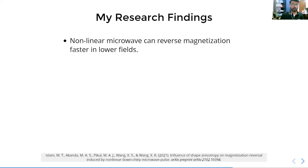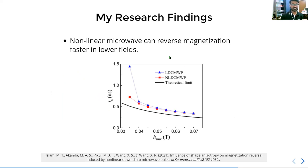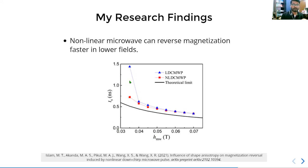We also found that non-linear microwave can reverse magnetization faster at lower fields. On the x-axis we have the applied microwave field and on the y-axis the switching time to reverse the magnetization. The switching time for non-linear downchirp is lower at lower fields, while for linear downchirp the switching time starts to increase beyond one nanosecond. For non-linear downchirp, it remains below one nanosecond.